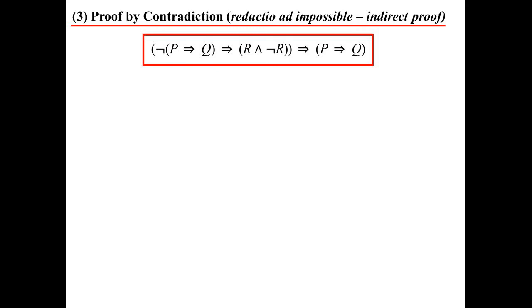Proof by contradiction — also known as reductio ad impossible — is an indirect proof. When you do proof by contradiction, we assume the opposite of what we're trying to prove. So if we're trying to prove P implies Q, we assume the negation of P implies Q. If that leads to both R and the negation of R — a contradiction — then the assumption was wrong. Therefore P implies Q.